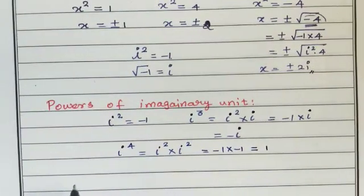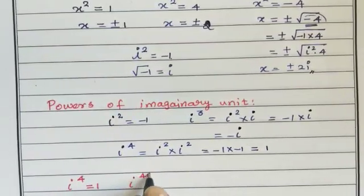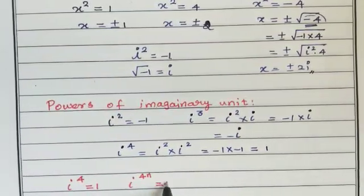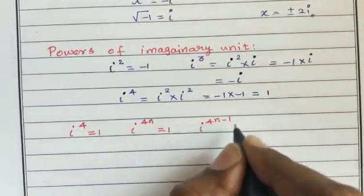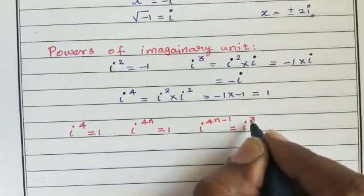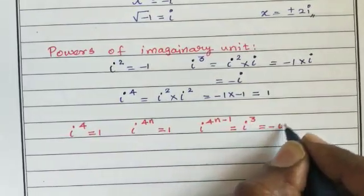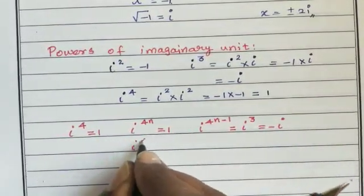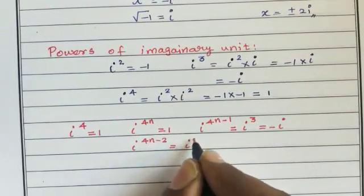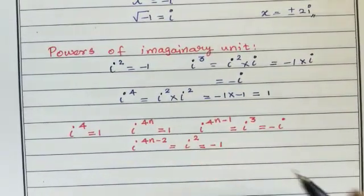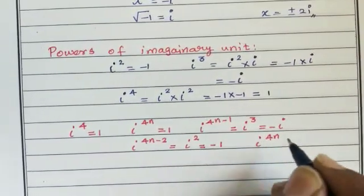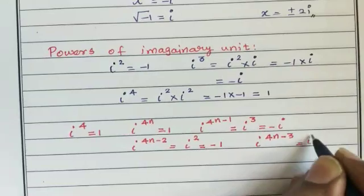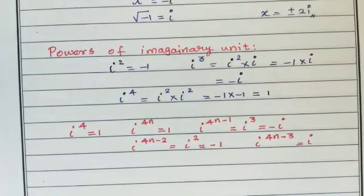So i to the power of any multiple of 4 equals 1. Therefore: i^(4k-1) = i³ = -i, i^(4k-2) = i² = -1, and i^(4k-3) = i.